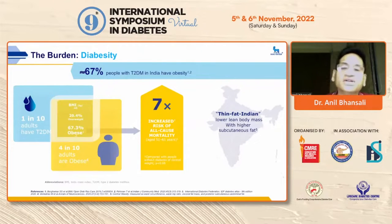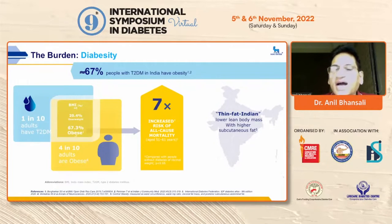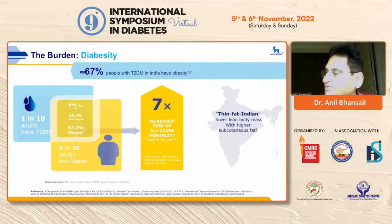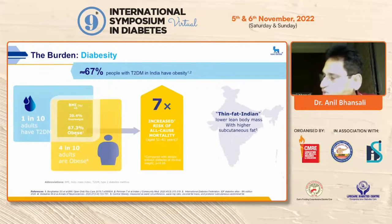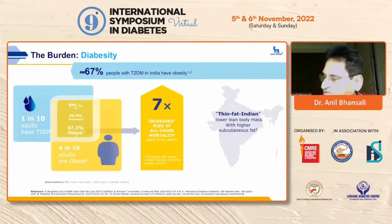There is a seven-fold higher increased risk of all-cause mortality. Furthermore, the concept of a 'thin fat Indian' is relevant here, where more visceral as well as subcutaneous fat is present and lean muscle mass is low. That further predisposes to more beta cell dysfunction and insulin resistance.